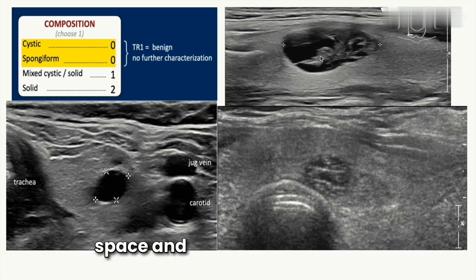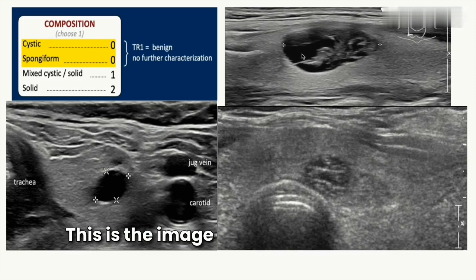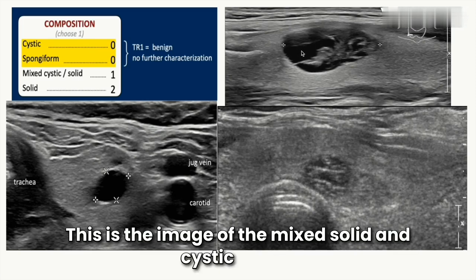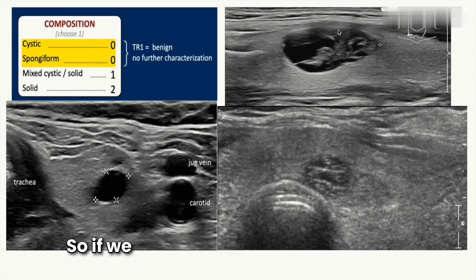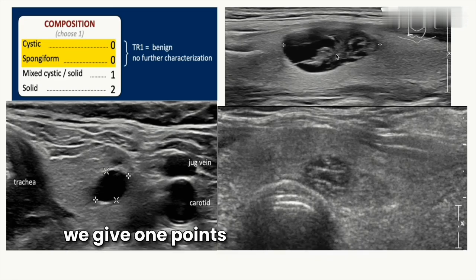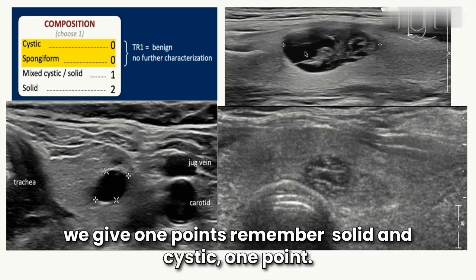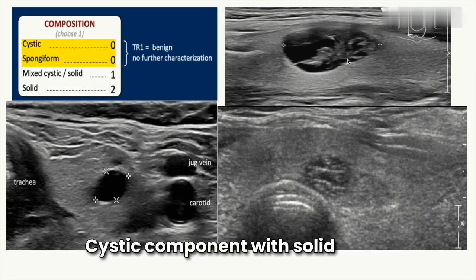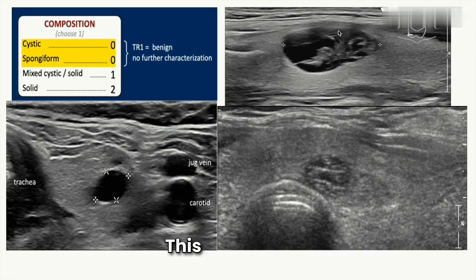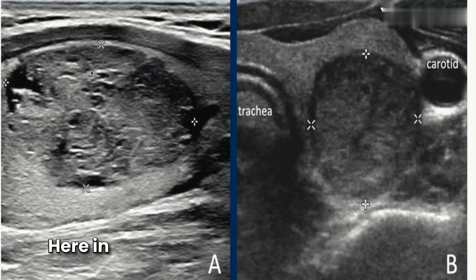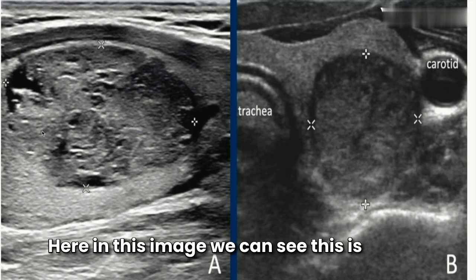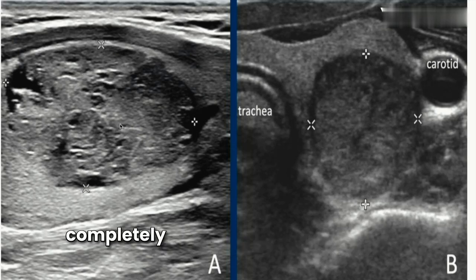Here we can see the cystic space and the solid component — this is the image of a mixed solid and cystic lesion. If we see this type of image, we give one point. A mixed solid and cystic lesion, or a cystic component with solid parts, scores one point.